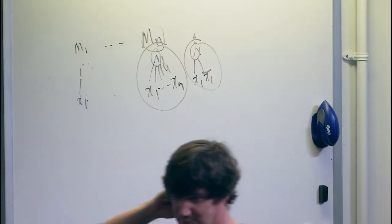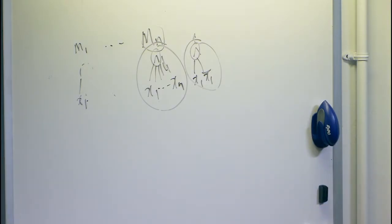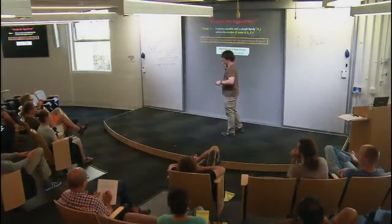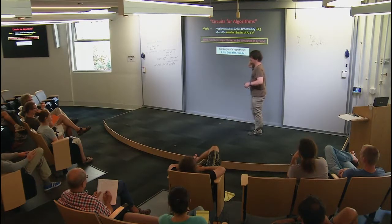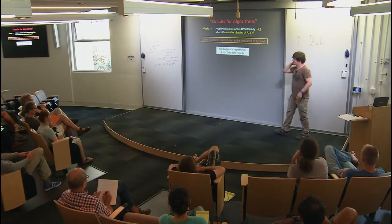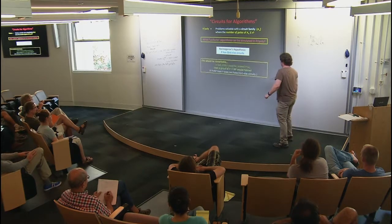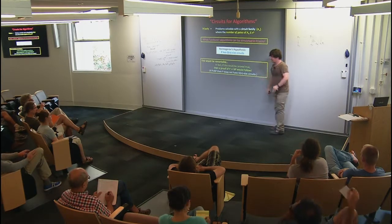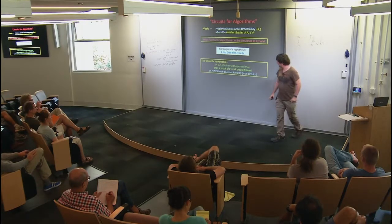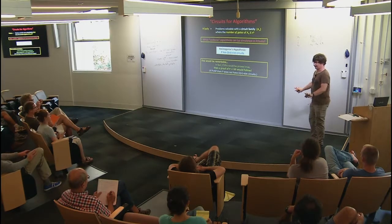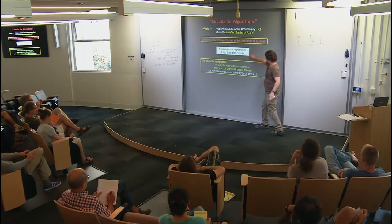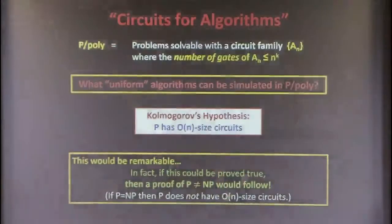This would be remarkable. As pointed out, by padding it literally implies EXP has 2^{delta·n} circuits. And a proof of P ≠ NP would follow immediately from proving this kind of circuit upper bound — you would get P ≠ NP. So the main reason this matters was sketched earlier.